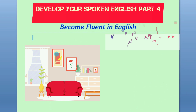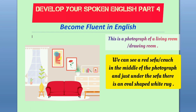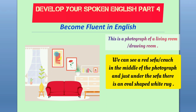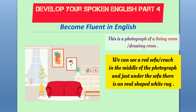This is a photograph of a living room, or drawing room. We can see a red sofa or couch in the middle of the photograph. Just under the sofa, there is an oval-shaped white rug. Note that a carpet covers the entire floor, whereas a rug is just under the sofa. So we can see an oval-shaped white rug just under the sofa.